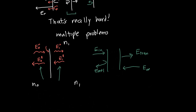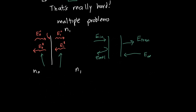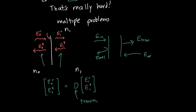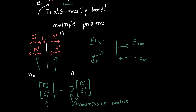What we'd like to do is figure out a relationship between the fields on the left and the fields on the right, and as you might have guessed from the title, this relationship is going to be in the form of a matrix. The electric fields in material zero traveling left and right are equal to some matrix — let's call it D, to be consistent with the literature — multiplied by E1 traveling to the right and E1 traveling to the left. We'll call this the transmission matrix. With this matrix we don't need to worry about the infinite reflections at this interface, because no matter what the outside world looks like, this will be the relationship between the fields on the left and the fields on the right.